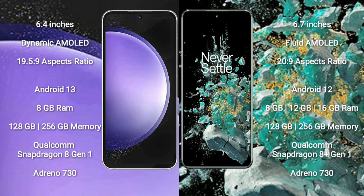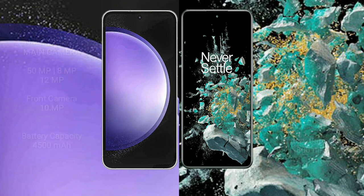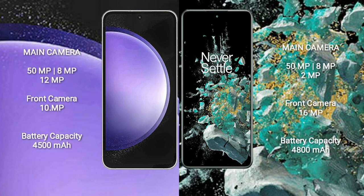OnePlus 10T comes with 8GB to 16GB RAM, 128GB to 256GB internal storage, Qualcomm Snapdragon 8 Gen 1 Processor, and GPU Adreno 730. Samsung Galaxy S23 FE features a triple rear camera setup: 50MP plus 10MP plus 12MP, and a front camera of 10MP. OnePlus 10T features a triple rear camera setup: 50MP plus 8MP plus 2MP, and a front camera of 16MP.